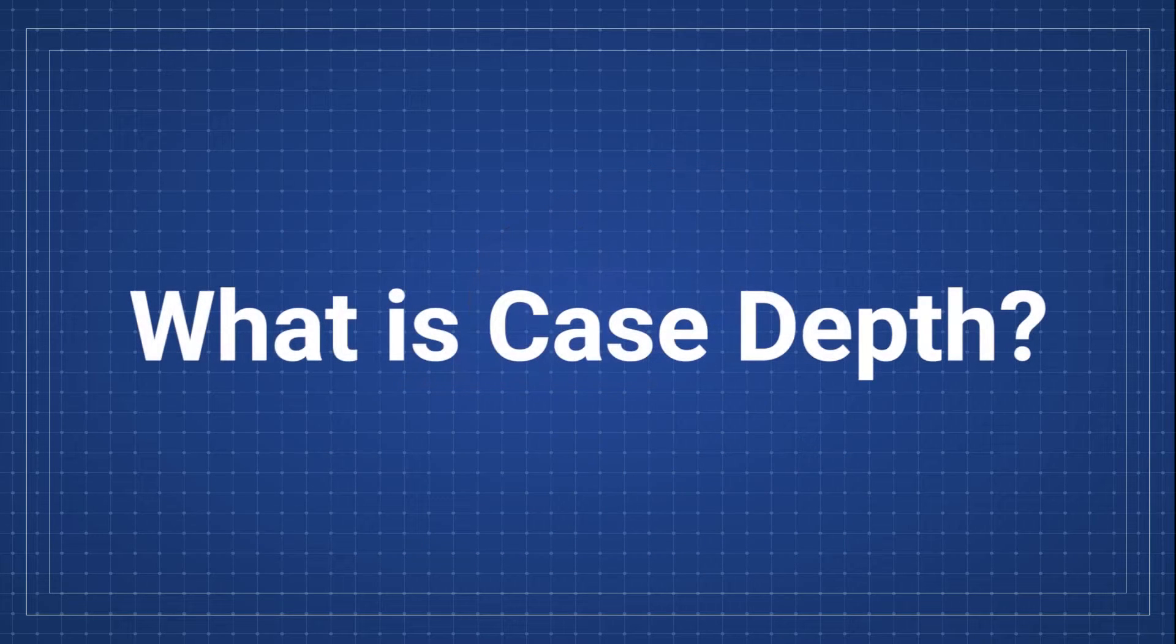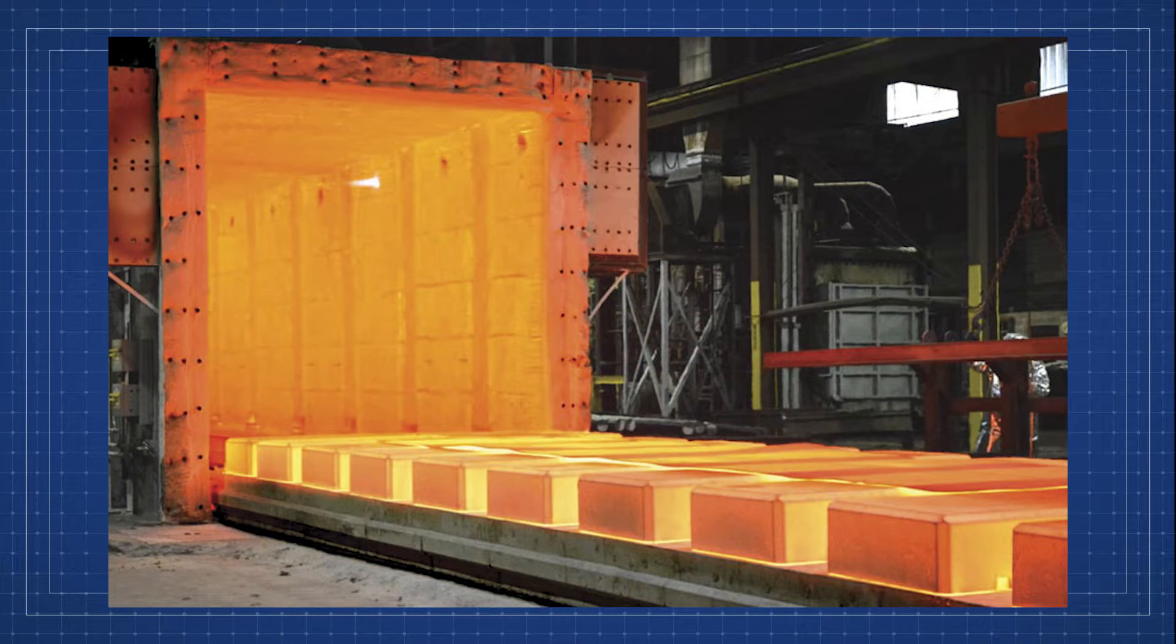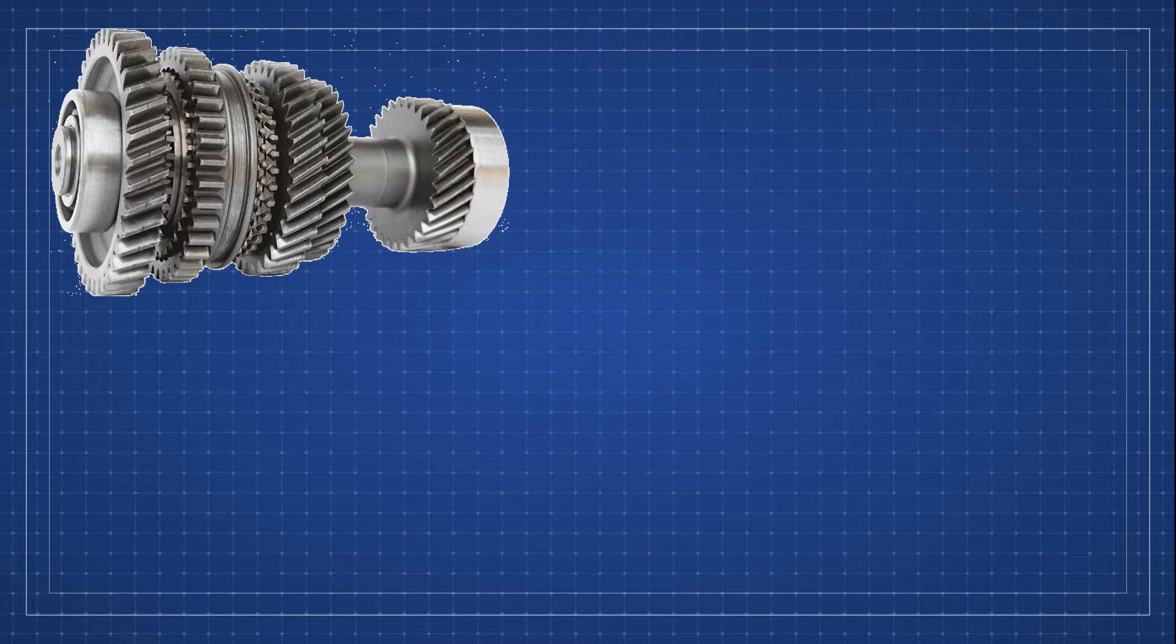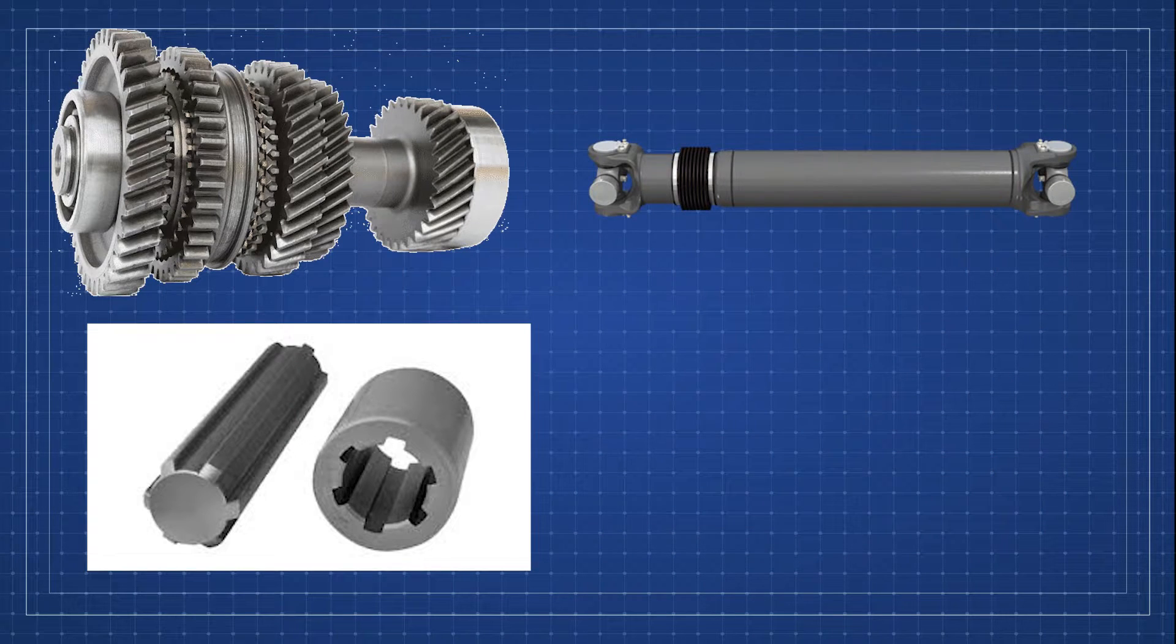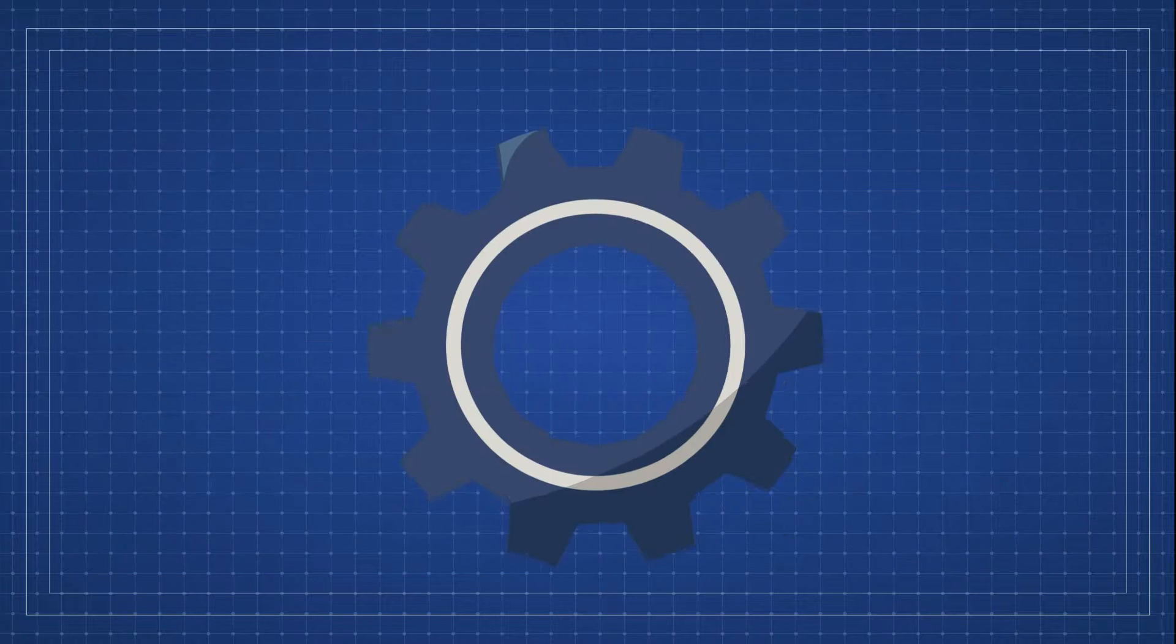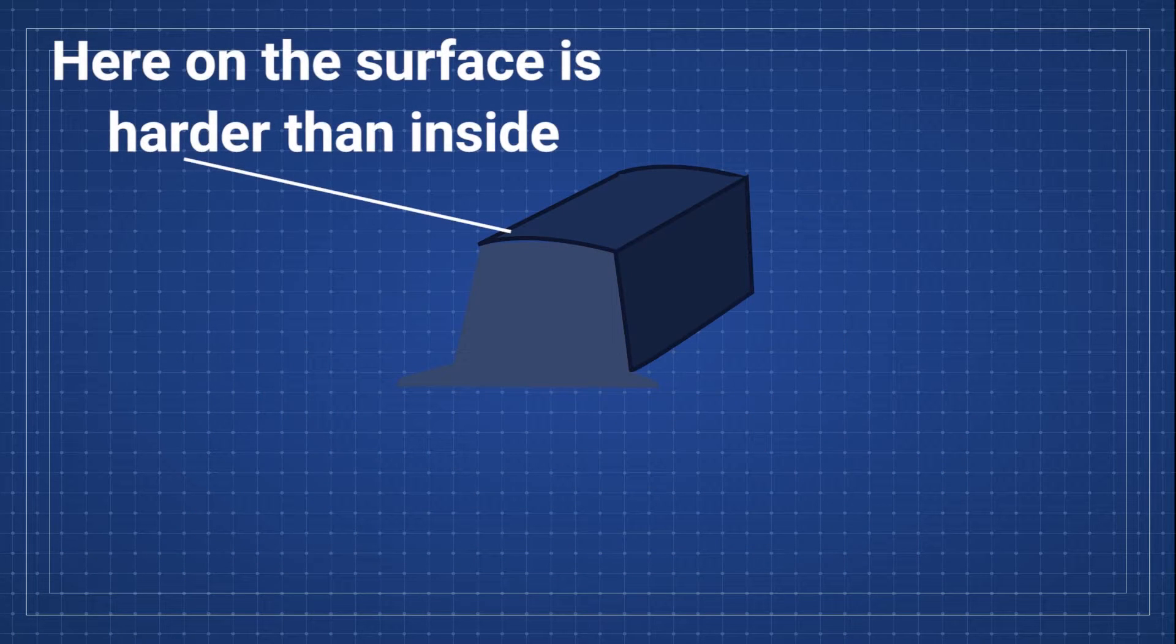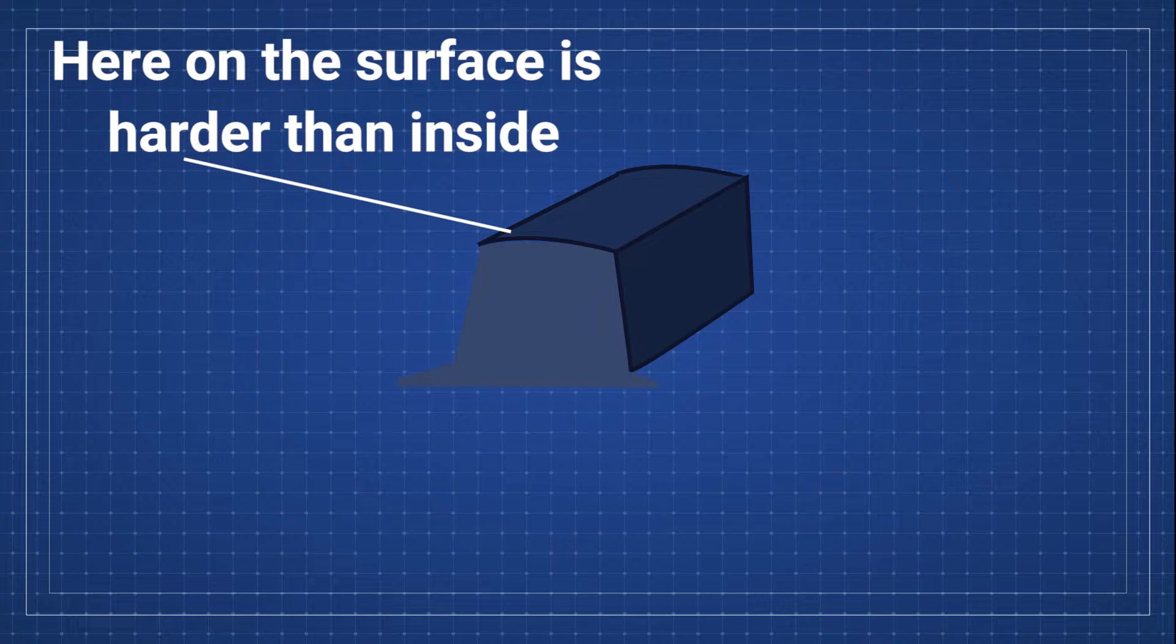But what is this case depth? Many engineering components are specially treated to produce a harder outer casing. Components such as gears, splines, driveshafts, and bearings are often surface hardened by carburizing, nitriding, or other processes which increase the concentration of elements at harden. This process will harden the material to some depth below the surface, and this region is what we call the case.